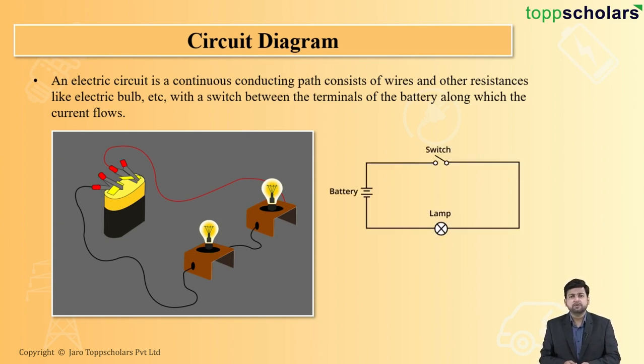Now students, if you observe here, this is nothing but a schematic sketch of a circuit diagram which consists of a battery. Battery is nothing but the source of the current supply. A switch is a device which helps to regulate the current. If you want to use the current, we can switch it on, or if you don't want to use, you can switch it off.